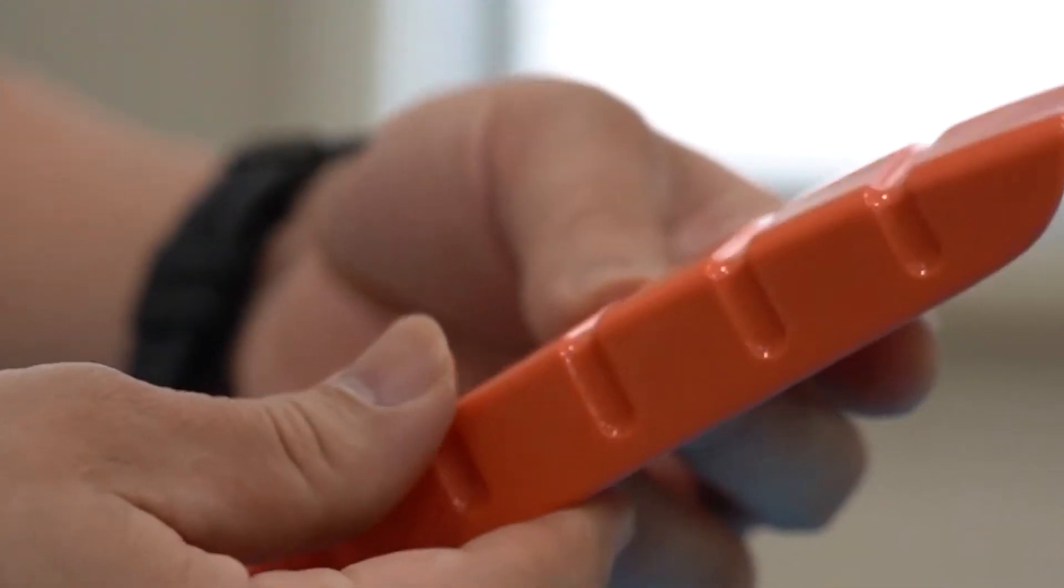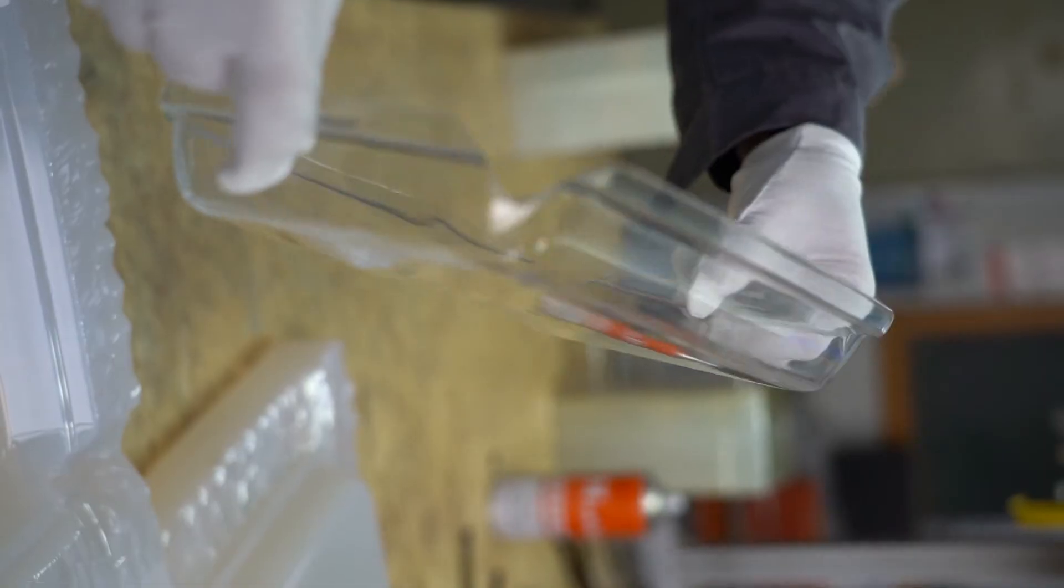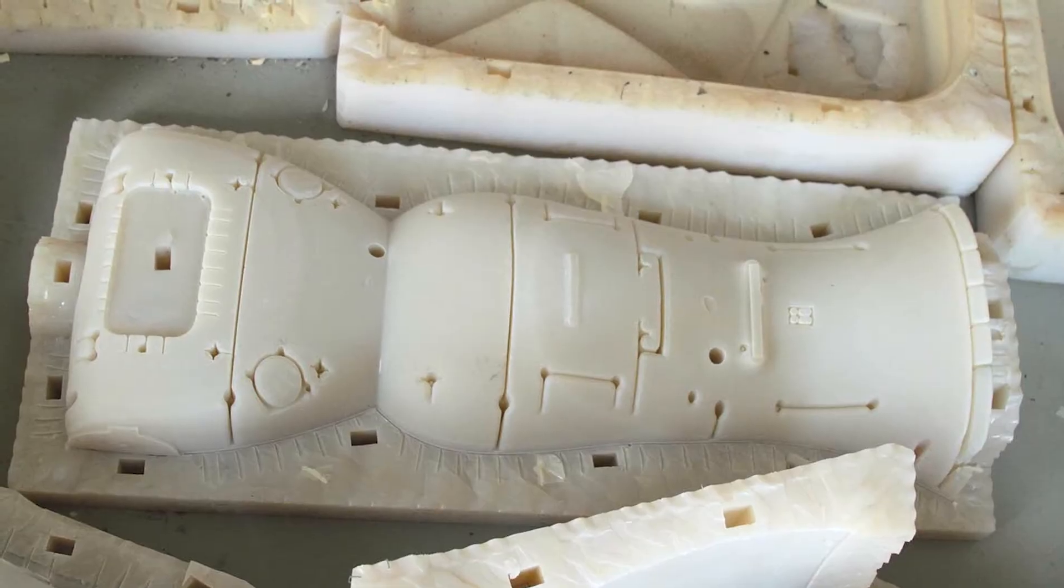With vacuum casting, you can make soft rubber parts, rigid parts, clear transparent parts. You can even cast huge or intricate components in a single piece.